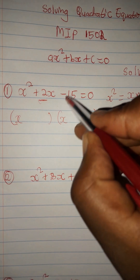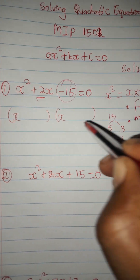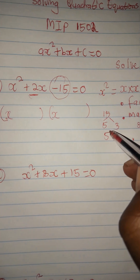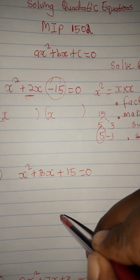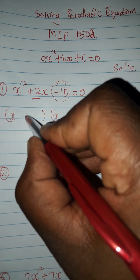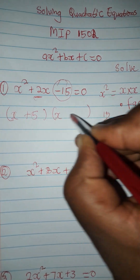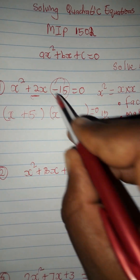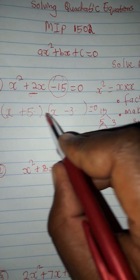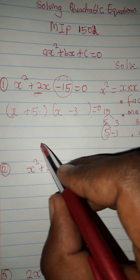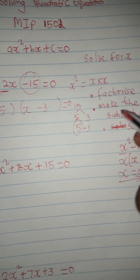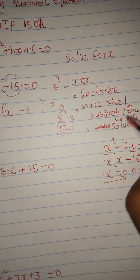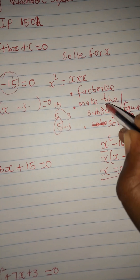To get positive 2, we have to say 5 minus 3. This is what you should understand: when your last term is negative, your signs will be opposite or different signs. Since 5 is the bigger number, it will take the positive sign, and we'll have minus 3, equated to zero. Because 5 minus 3 is 2, and 5 times negative 3 is negative 15.